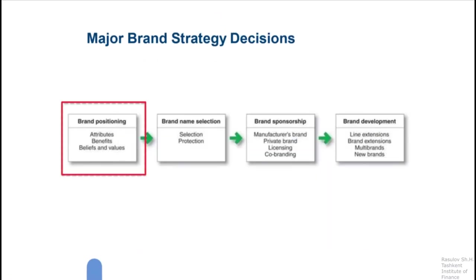Another major decision-making process is brand strategy decision making. It includes: first, brand positioning; second, brand name selection; third, brand name sponsorship; and fourth, brand development. Brand positioning requires marketers to decide what kind of attributes, benefits, beliefs, and values a product should have.